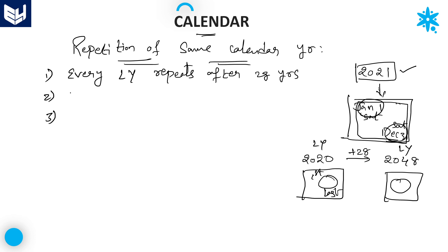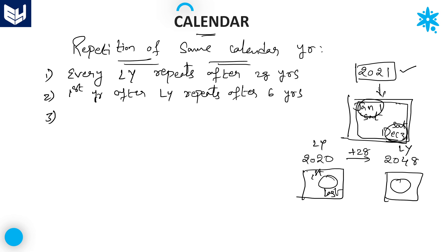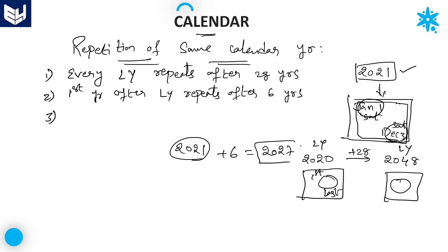The first year after a leap year repeats after 6 years. For example, 2021 is the first year after a leap year. The same calendar repeats again after 6 years, so 2027 will have the same calendar as 2021.